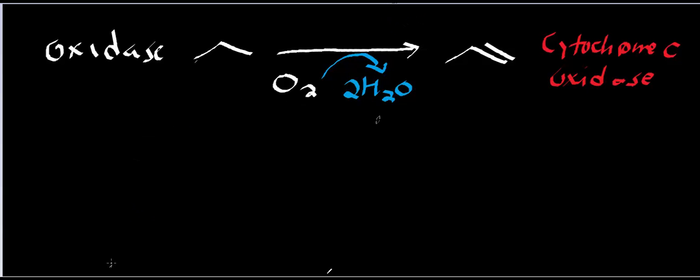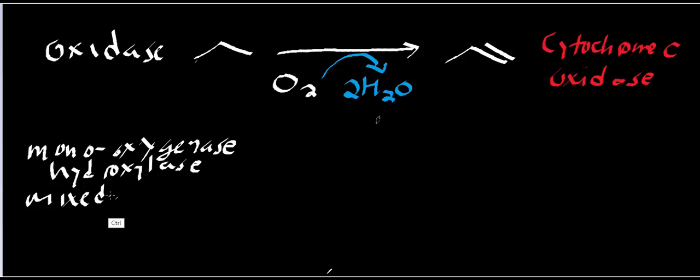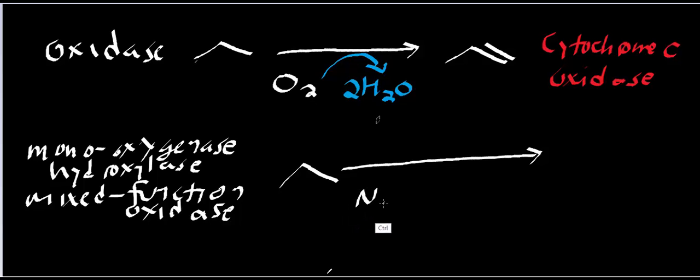The next type of enzyme has several names. One of them is a monooxygenase. They're also called a hydroxylase. And the other name, which you should not get confused with oxidase, is a mixed function oxidase. And we'll talk about why it's mixed function. And essentially this is what they do. They're usually NADPH dependent. So you end up getting out an NADP.